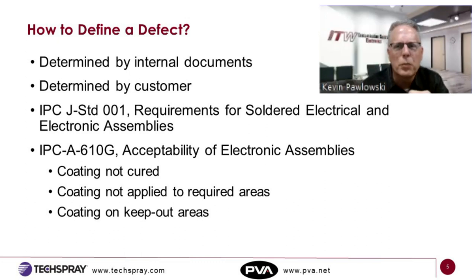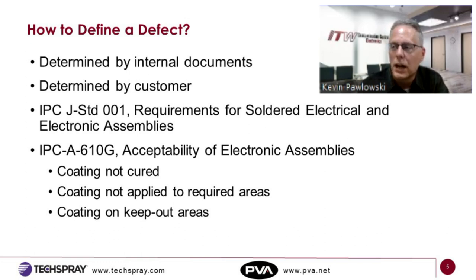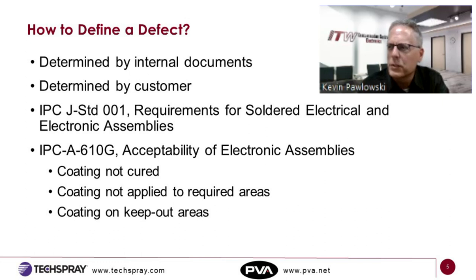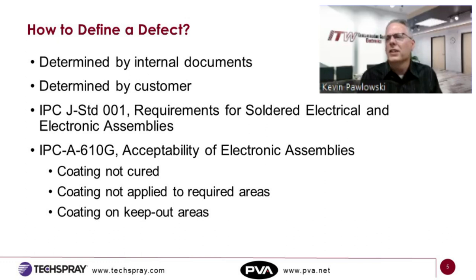The standards are first and foremost set by the user or customer — whether the contract manufacturer or their customer. What's a defect for one might not be a defect for another. For example, a void opening in the coating over a bare board via may not cause any problems for some customers, while for others it's a serious defect or a process indicator of a problem.